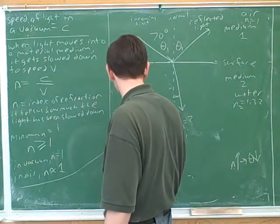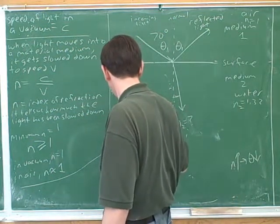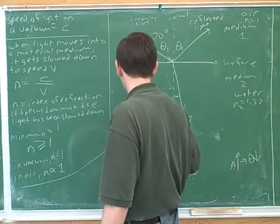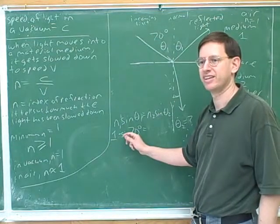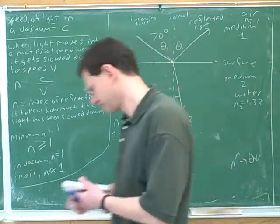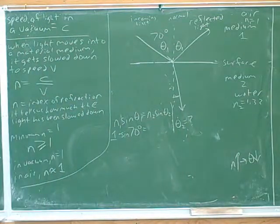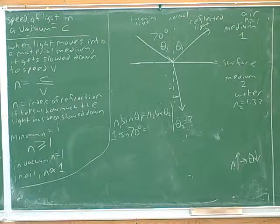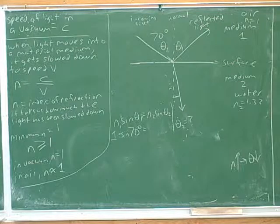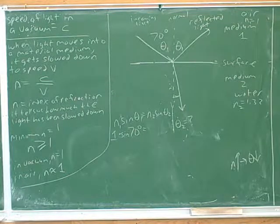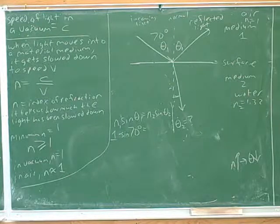And what are we plugging in for theta 1? 70 degrees. When I was looking over your shoulder, it looked like you left out the sine. I did. Okay. Let's do this on paper — take your time and let's work this out on paper. So let's start by writing down a good equation.